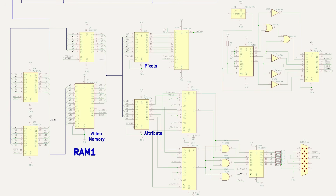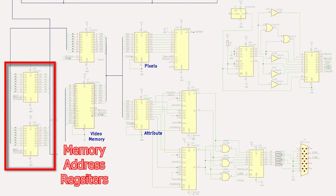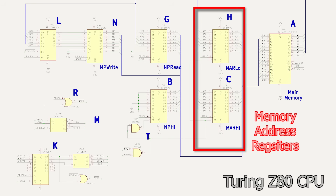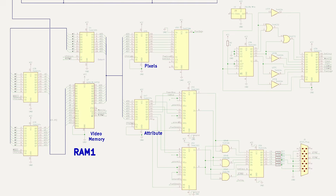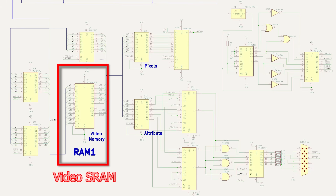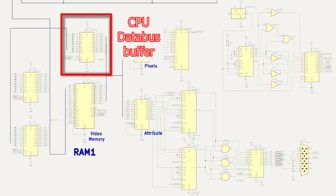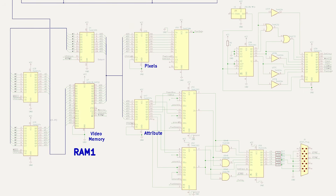Next section down. On the left, I've got duplicate memory address registers — these mirror the CPU address memory registers when the CPU writes to the main memory. Here's the video static RAM. Remember, the raster generator reads and the CPU writes. The 74HC373 latch is basically acting as a tri-state buffer in transparent mode, but it means if I want to get fancy later, like I did in the Commodore 64 build, I can.